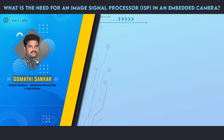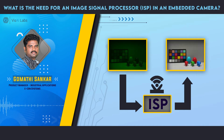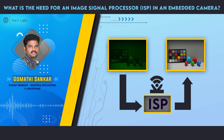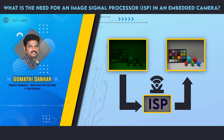What is the need of an ISP? What is an ISP? An ISP is a hardware or software block which is responsible for most of the auto functions — auto exposure, white balance, auto focus — all these things are taken care of by the image signal processor.